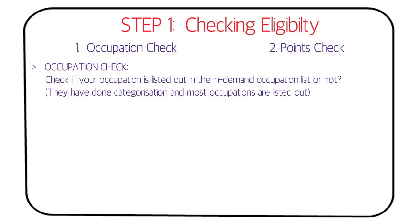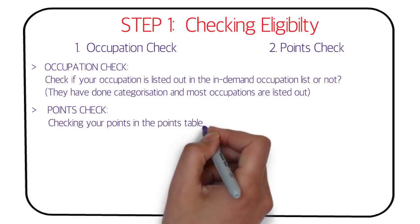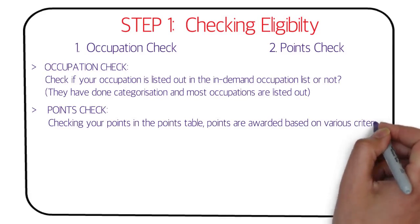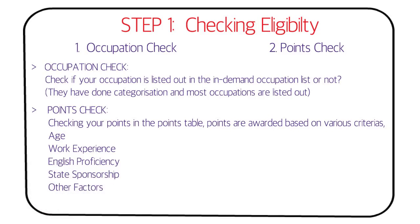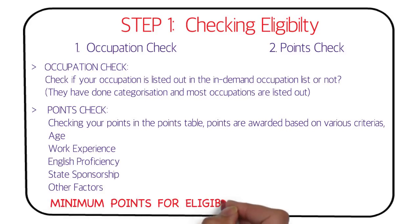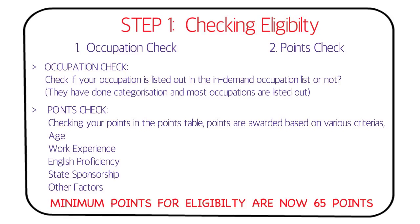The second part is a points check. Points are awarded based on various criteria like age, work experience, English proficiency, state sponsorship, and other factors. You need to calculate your points and check whether you reach the minimum threshold of 65 points.